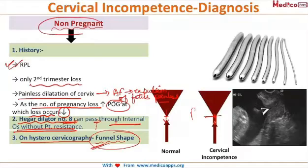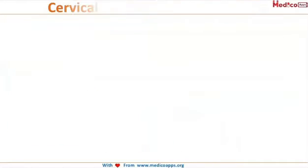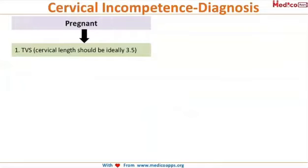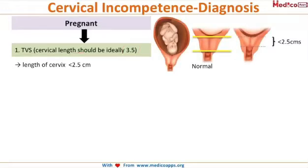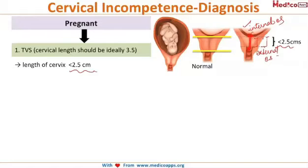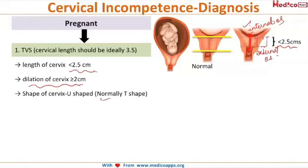To diagnose cervical incompetence when the patient is pregnant, we do a transvaginal ultrasound. The normal cervical length is ideally 3.5 cm. If the cervical length — measured between the internal os and the external os — is less than 2.5 cm, or the dilatation of the cervix is more than 2 cm, or the shape of the cervix, which is normally T-shaped, becomes U-shaped, these are diagnostic findings.